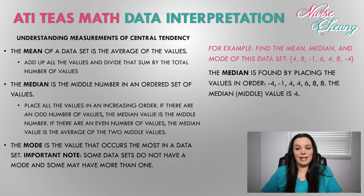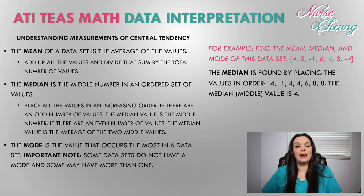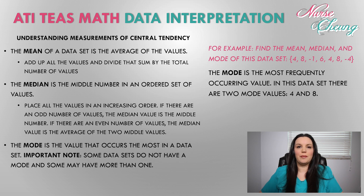Now let's find the median of the same data set. Place the values in order: -4, -1, 4, 4, 6, 8, 8. We have an odd number of values, so the median is the middle number, which is 4. Lastly, the mode is the most frequently occurring value. In this data set, both 4 and 8 are repeated twice, so the data set has two modes: 4 and 8.